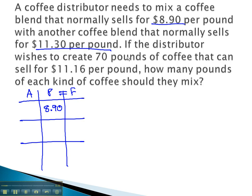The second blend that we're using sells for 11.30 per pound. We're told the distributor wishes to create a final solution that is 70 pounds, that can sell for 11.16 per pound. The amount at the end is 70 pounds, and the price is 11.16.